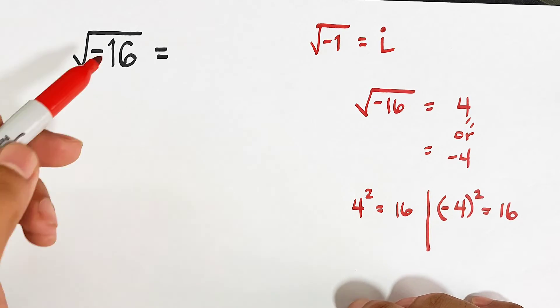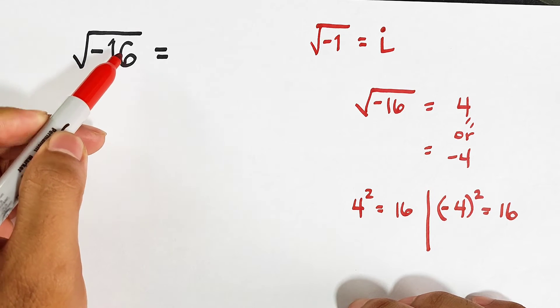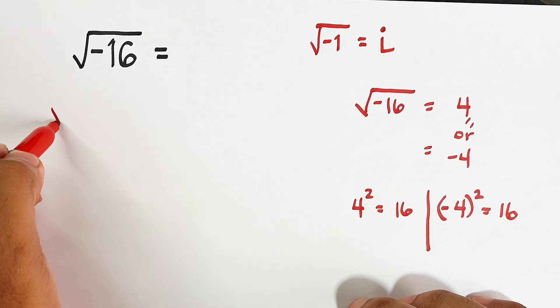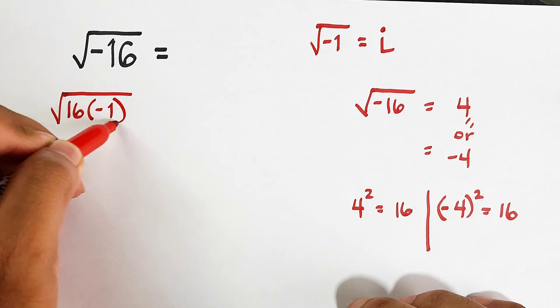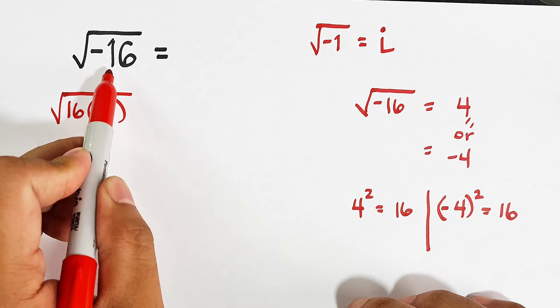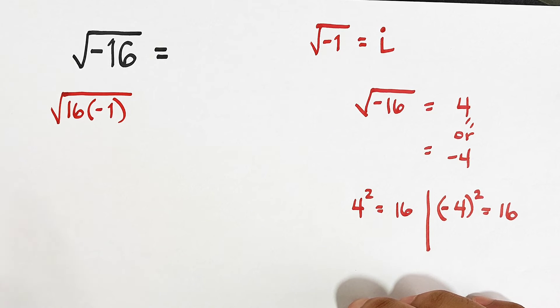First, as you can see, we have square root of negative 16. Now, we can factor it out like this one. Square root of 16 times negative 1. Again, 16 times negative 1 is negative 16.